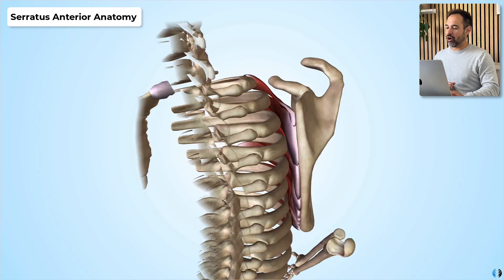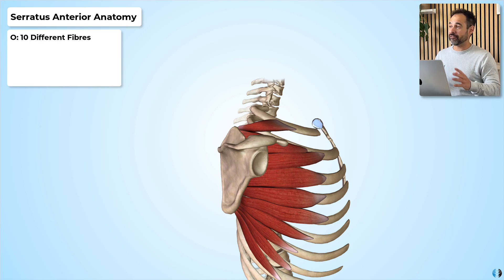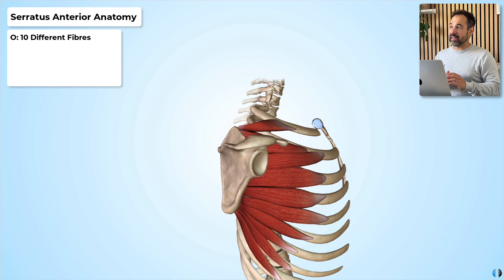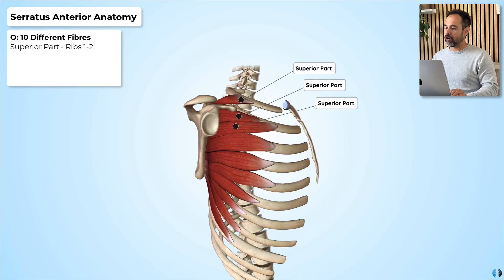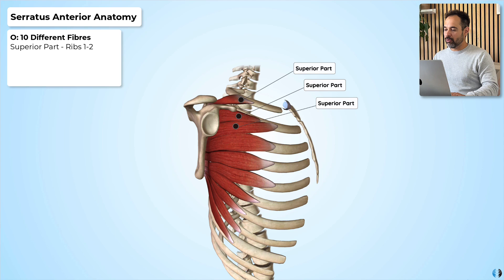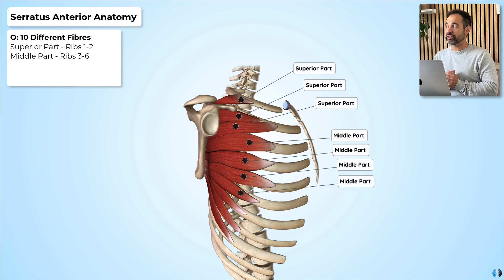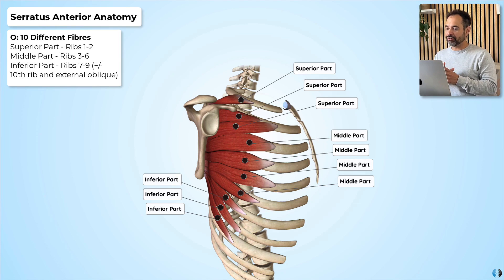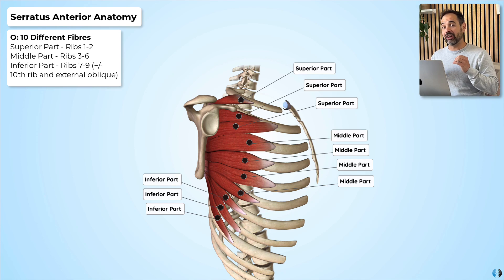This muscle is made up of 10 different fibers, presenting in a fan shape around the ribs of the thorax, grouped into different sections. The superior part originates from the first and second ribs as well as the intercostal fascia — these first three fibers form the superior part. The middle part consists of four fibers originating from ribs 3, 4, 5, and 6. The inferior part comprises the remaining three fibers from ribs 7 to 9, with some variables suggesting attachments to the 10th rib and potentially the external oblique muscle.